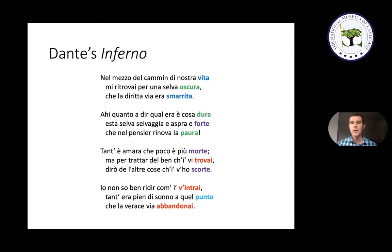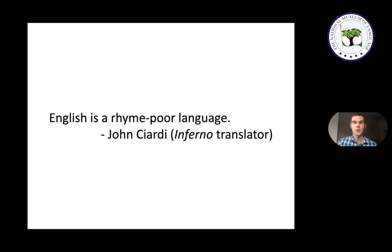In Italian it's relatively easy to have such an intricate rhyme scheme because, as we saw, Italian words tend to end in vowels — and there are only so many vowels, so for any given Italian word it's usually not that hard to find others that rhyme with it. In English, though, rhyming is harder. In the words of one translator of the Inferno, 'English is a rhyme-poor language.' This means that when people have translated the Inferno, they've often had to make compromises on Dante's rhyme scheme.